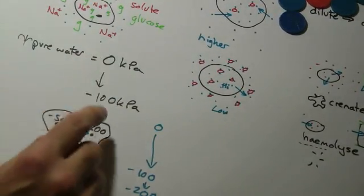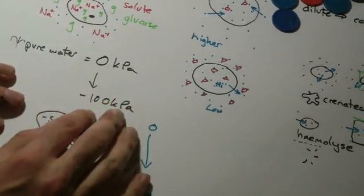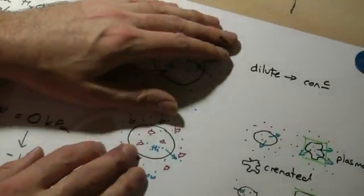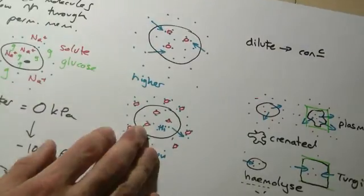So remember this idea: the highest water potential is zero. Water will flow from high to low water potential. And also this idea, the other way to think of it, is that water will go from more dilute to a more concentrated solution.